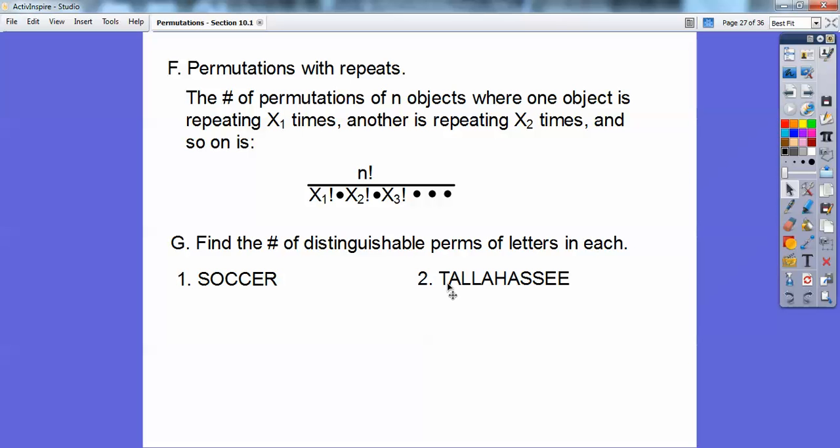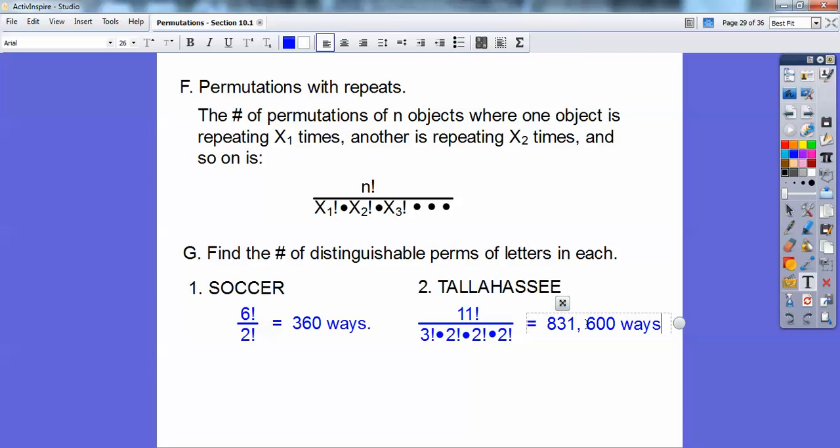Over here, TALLAHASSEE is 1, 2, 3, 4, 5, 6, 7, 8, 9, 10, 11 factorial. Over, I see 3 a's, so there'll be a 3 factorial. I see 2 l's, so a 2 factorial. These are on the bottom. I see 2 s's, so another 2 factorial, and 2 e's, another 2 factorial. So 6 factorial over 2 factorial is 360 ways. And then this one is 11 factorial over those repeating letters, so you get 831,600 different ways.